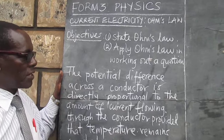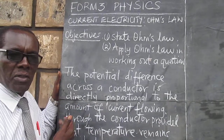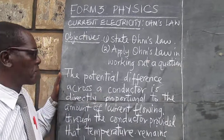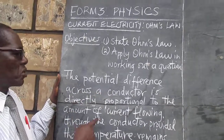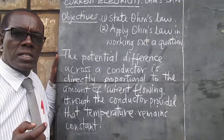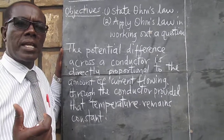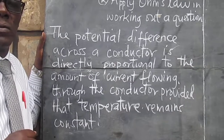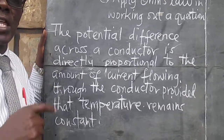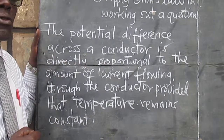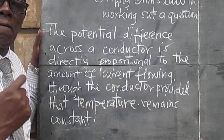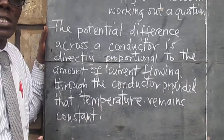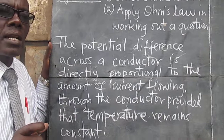The statement for Ohm's law is already on the board and we follow it. The potential difference across a current carrying conductor is directly proportional to the amount of current flowing through the conductor, provided that temperature and other physical conditions remain constant.